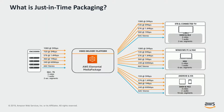Before we dive into Media Package, let's look at the concept of just-in-time packaging. Just-in-time packaging is where you take one incoming stream of video and dynamically convert it into multiple formats based on the requesting device. In this image, you can see one ladder of stream coming from the upstream encoder into the packaging solution — in our case, Media Package — which dynamically converts it to the requesting device. This optimizes your storage efficiency and helps you deliver content to a wider audience.